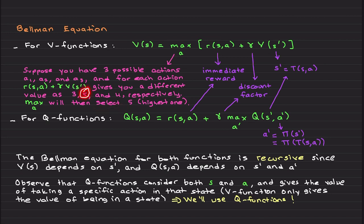Since the value 5 is the highest value as compared to 3 and 4, that's all I am going to say about the Bellman equation for V functions. So let's look at the Bellman equation for Q functions.